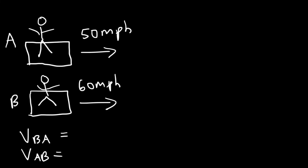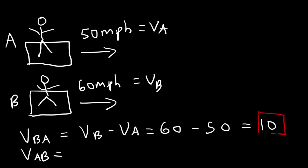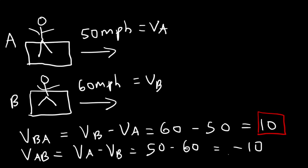Train b is moving 10 miles faster than train a. So the velocity of b with respect to a is simply 10 miles per hour. The way you calculate it is vb minus va. va is 50 and vb is 60, so it's going to be 60 minus 50, which is 10 miles per hour. That's the velocity of b with respect to a. The velocity of a with respect to b is va minus vb, that's 50 minus 60, so that's negative 10. So a is moving 10 miles per hour slower than b.